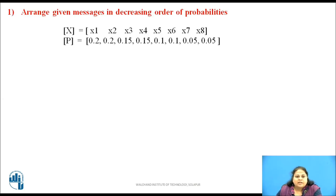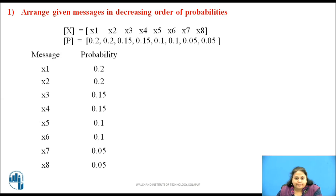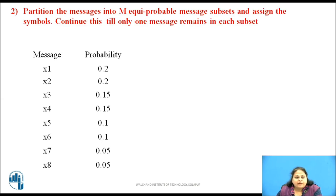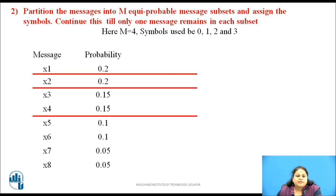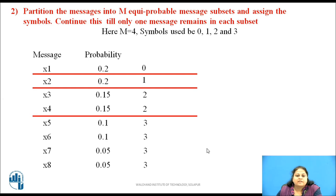Now let us solve the same problem using Shannon-Fano coding method. Arrange the given messages again in decreasing order of their probabilities. In Shannon-Fano coding, the next step is to divide the probabilities into m equiprobable message subsets; here m is equal to 4. The first possible partition is as shown. Using symbols 0, 1, 2, and 3: symbol 0 is assigned to messages in the first subset, 1 to the second subset, 2 to the third subset, and 3 to all messages in the fourth subset.